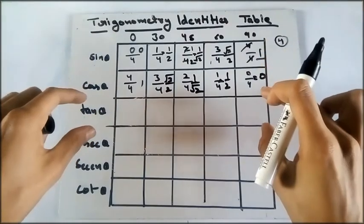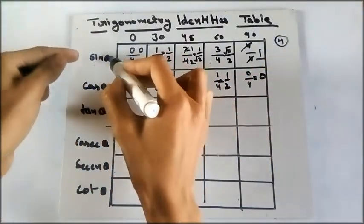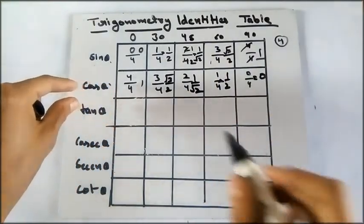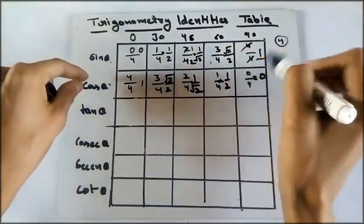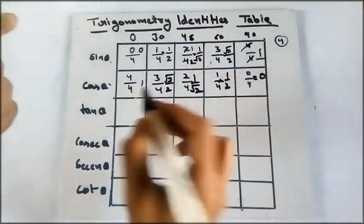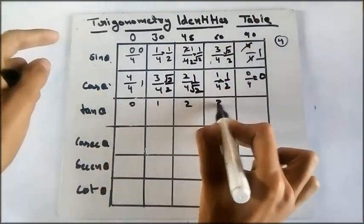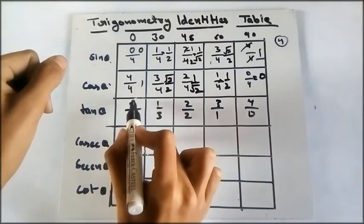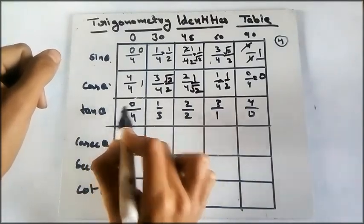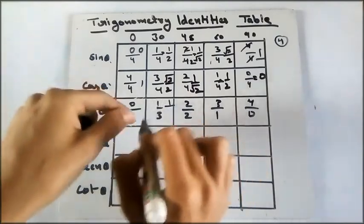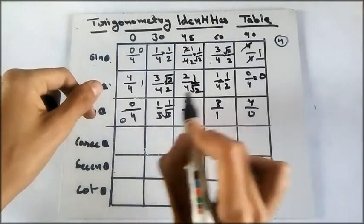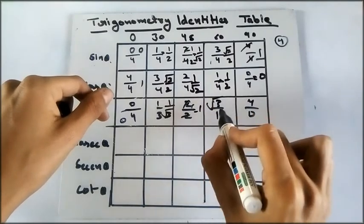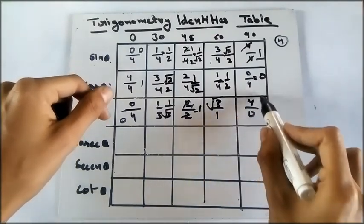Now let's jump into tan theta. Tan theta is sine theta upon cos theta. In the previous video I have written that in here: tan theta is sine theta upon cos theta. You can either divide these things or divide the starting part of the function, that is 0, 1, 2, 3, 4 upon 4, 3, 2, 1, 0. Now 0 upon 4 is 0. 1 upon 3 is 1 upon—and we are taking the root always—1 upon root 3. 2 upon 2 cancels each other: 1, and 1's root is 1. And here root 3. Root 3 will remain. And 4 upon 0—now something upon 0, this is an indeterminate form which is not defined.